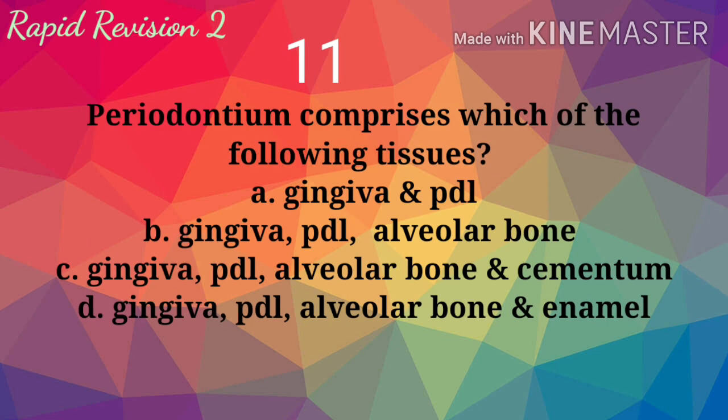Periodontal abscess comprises which of the following tissues? A. Gingiva and PDL. B. Gingiva, periodontal ligament, and alveolar bone. C. Gingiva, periodontal ligament, alveolar bone, and cementum. D. Gingiva, periodontal ligament, alveolar bone, and enamel. Answer is C.